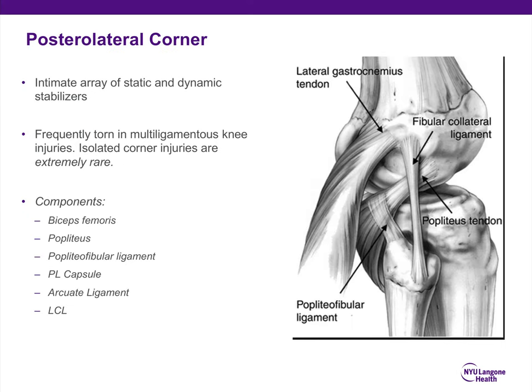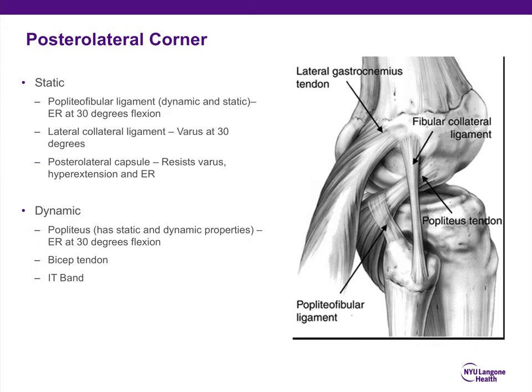The posterolateral corner is an intimate array of static and dynamic stabilizers, very frequently torn in multiligamentous knee injuries. Isolated posterolateral corner injuries are extremely rare. The components include the biceps femoris, the popliteus, the popliteofibular ligament, posterolateral capsule, the arcuate ligament, and the lateral collateral ligament. Static stabilizers include the LCL — most important for varus at 30 degrees — the posterolateral capsule, and the popliteofibular ligament. Dynamic stabilizers include the popliteus, which prevents rotation at 30 degrees of flexion, the biceps tendon, and the iliotibial band.